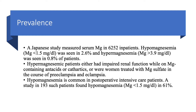Hypomagnesemia is common in postoperative patients and in the ICU. In a study of 193 ICU patients, hypomagnesemia defined as less than 1.5 milligrams per deciliter was seen in 61 percent of patients.